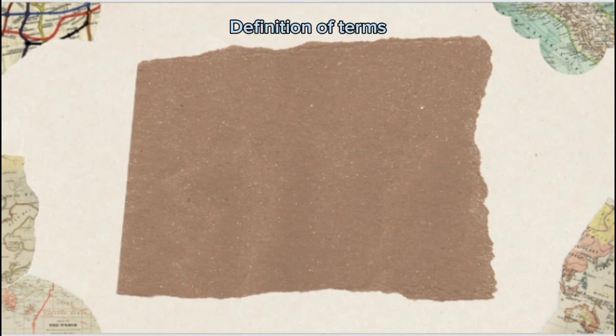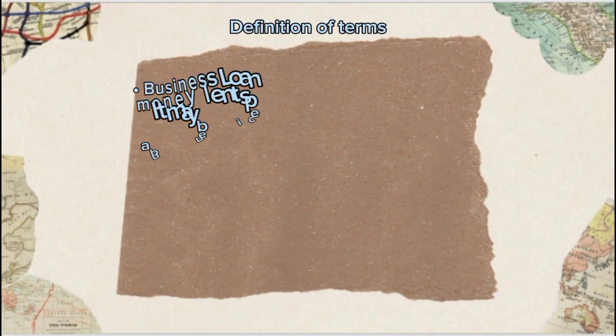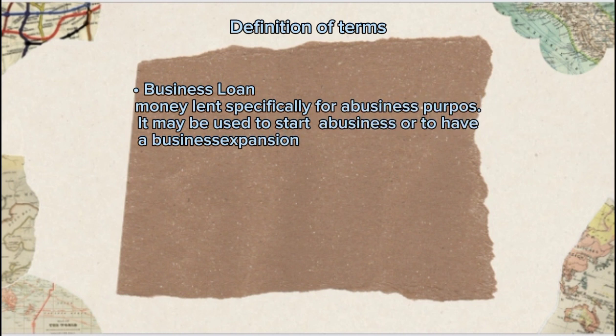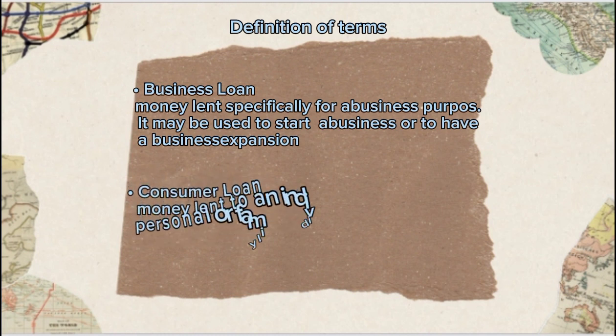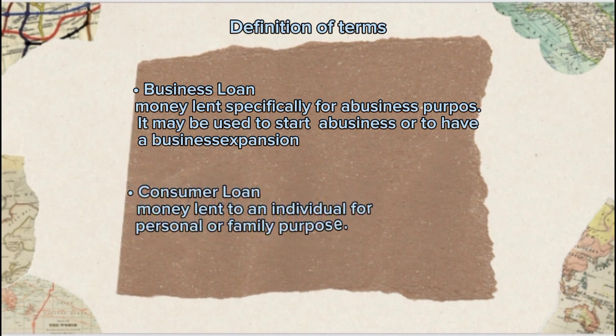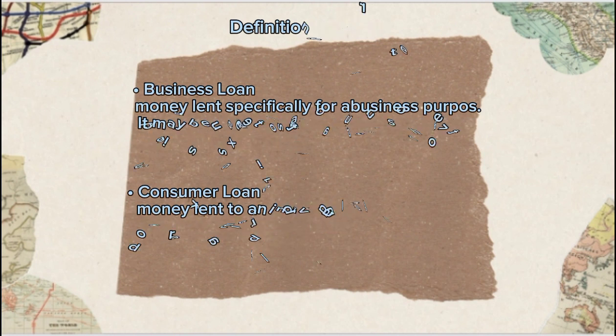First, the business loan. A business loan is money lent specifically for a business purpose. It may be used to start a business or for business expansion. Second, the consumer loan. A consumer loan is money lent to an individual for personal or family purpose.